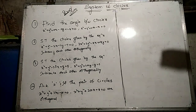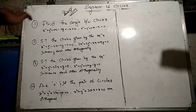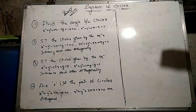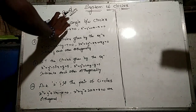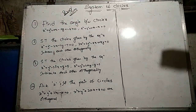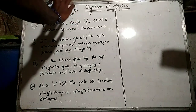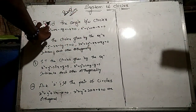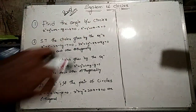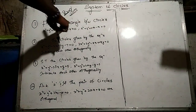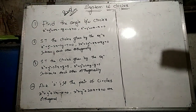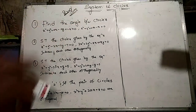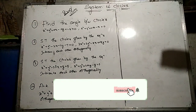Hello friends. I am going to talk about two marks and four marks of the system of circles. I will explain the first four questions. First, I have two marks and then I have four marks. Find the angle between the two given circles — I will cover the topic of the angle between circles, asking questions for four marks and two marks.